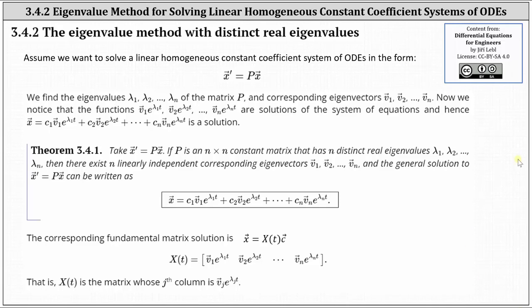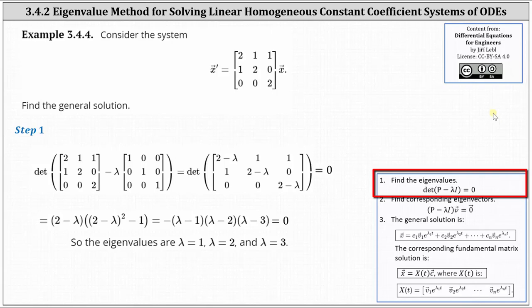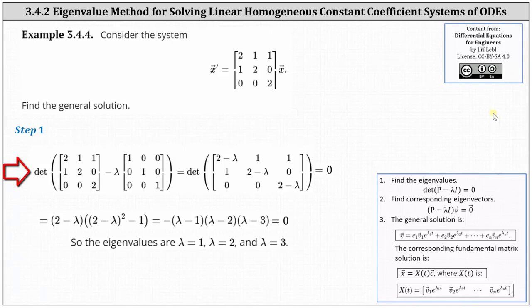Let's take a look at an example. We consider the system where x prime equals a 3 by 3 matrix times x, and we're asked to find the general solution. Step one is to find the eigenvalues by solving the determinant of the difference of matrix p and lambda times I equals 0. In our case, matrix p is the given 3 by 3 matrix, so we have the determinant of p minus lambda times the 3 by 3 identity matrix equals 0. Simplifying, we have the determinant of this 3 by 3 matrix equals 0.